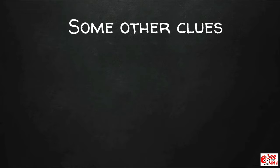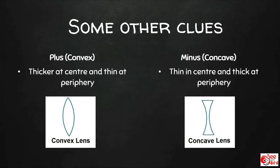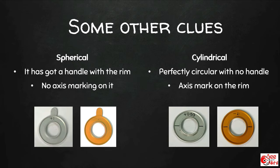Apart from this, there are some add-on clues you can use. Plus lenses are thicker in the center and thinner in the periphery, while minus lenses are thin at the center and thicker at the periphery — but these differences might not be very obvious in low-powered lenses. Spherical lenses have a handle and axis marking is absent, while in cylindrical lenses the handle is absent and markings are present. But these are just add-on clues, so do not answer only on the basis of these, because there can be trick questions.